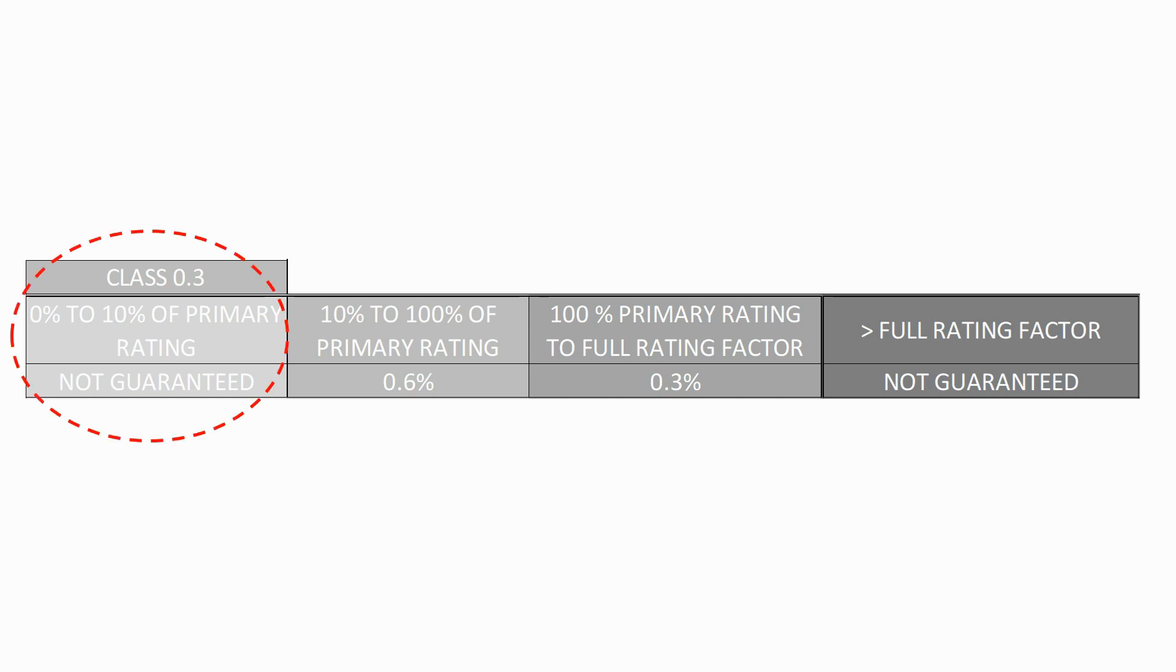For the class 0.3 current transformer, from 0 to 10% of the primary rating we don't guarantee any accuracy. From 10% to 100% of the primary rating we guarantee the CT error will be less than plus or minus 0.6%.